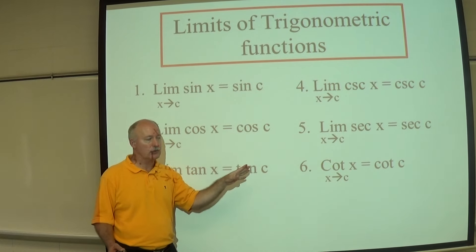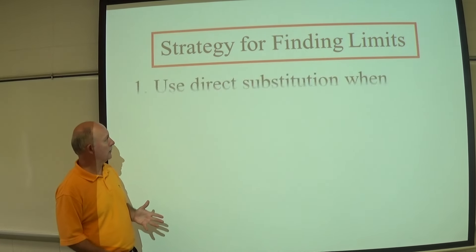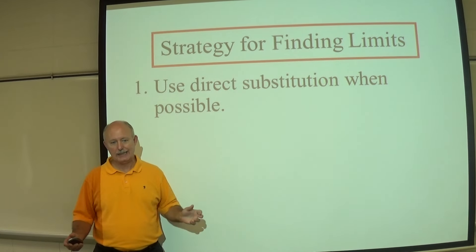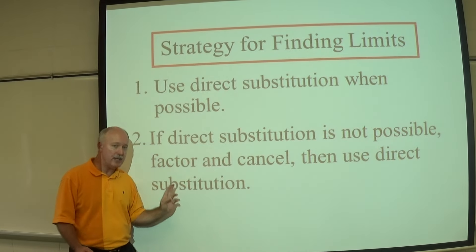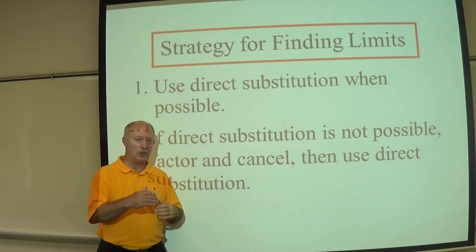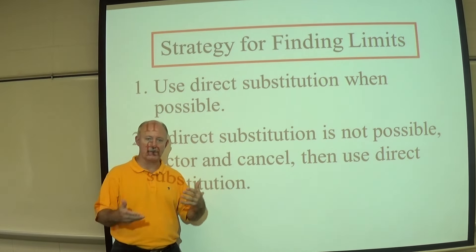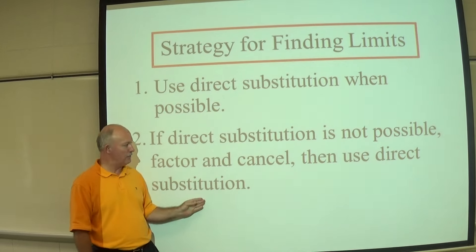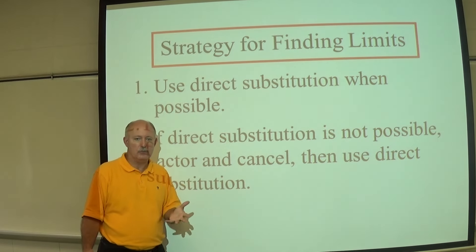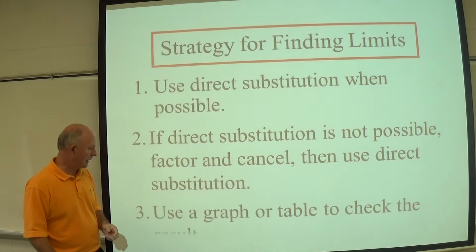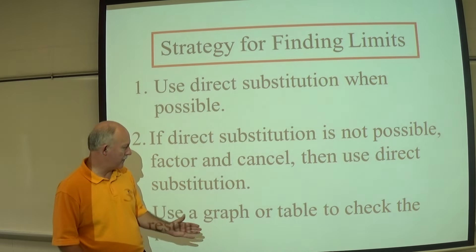Here's the overall strategy for finding limits. Always try direct substitution first — plug in the value and see what you get. If direct substitution gives you zero over zero, that indicates a hole in the graph, and you need to factor and cancel to remove the hole, then use direct substitution. In the next video I'll review some factoring techniques that will come in handy. You can also use a graph or table to verify your results.